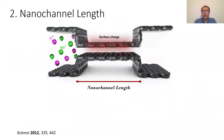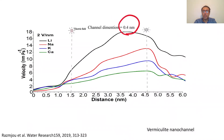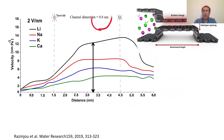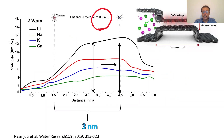The second parameter is nanochannel length, which contributes to ion selectivity. When we set the nanochannel size to 0.4 nanometers, lithium ions reached their maximum velocity 2 nanometers from the nanochannel entrance. Whereas when we set the size to 0.8 nanometers, lithium ions reached their maximum velocity 3 nanometers from the entrance. This means there is an interplay effect between nanochannel size and length, which needs to be carefully optimized.